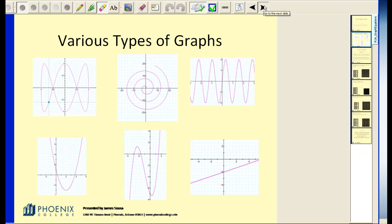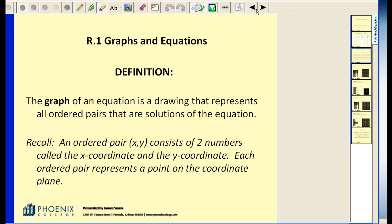Let's take a look at a definition before we start. The graph of an equation is a drawing that represents all of the ordered pairs that are solutions of the equation. Now, remember that an ordered pair consists of two coordinates, an x-coordinate and a y-coordinate. So, we're going to find values for x and y that make a given equation true. And then we're going to plot those points on the coordinate plane.